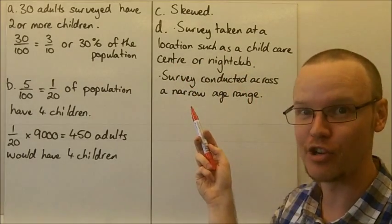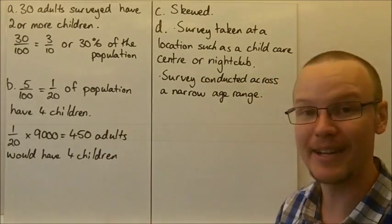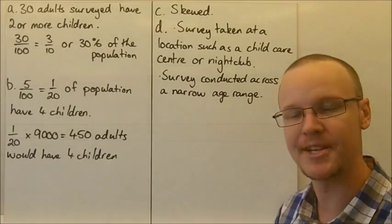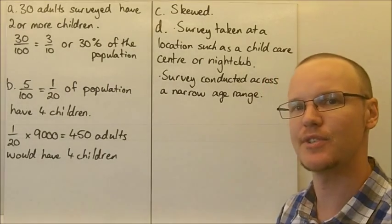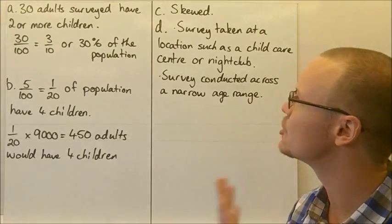You would expect not many of the adults, if it was taken outside of a childcare centre, to say they had no children. So the childcare centre is probably not what happened here, but it could lead to bias. If you took the survey outside of a childcare centre, you'd have a lot more people than maybe the normal population saying they had children.